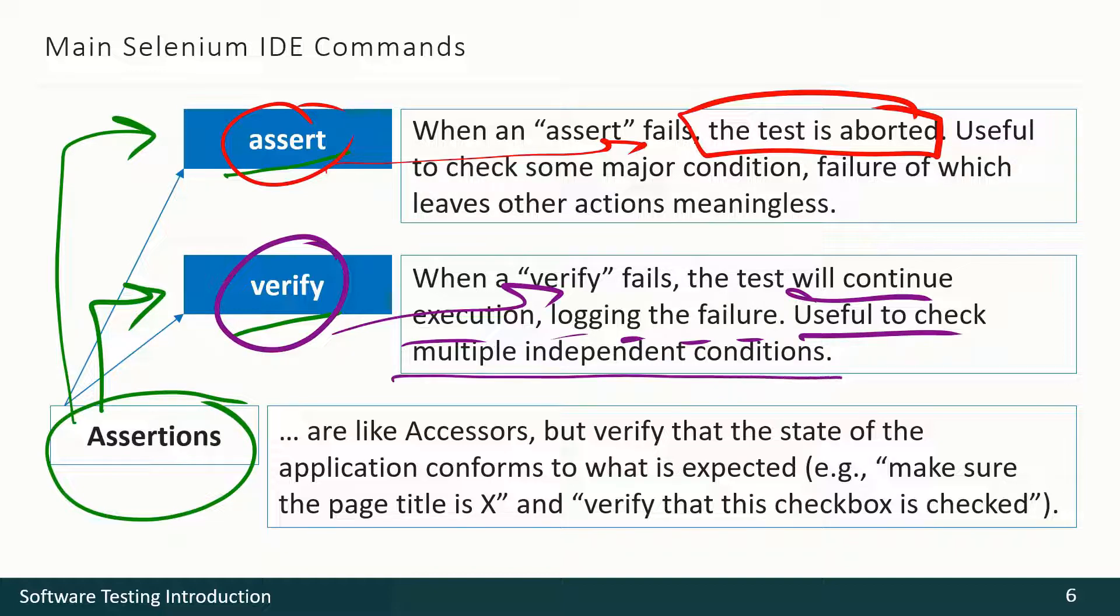It is useful to check multiple independent conditions. Imagine that in real life you have some shopping list. And you go to the shop. And you check if this is in the shop, it's OK. And maybe something is not in the shop.